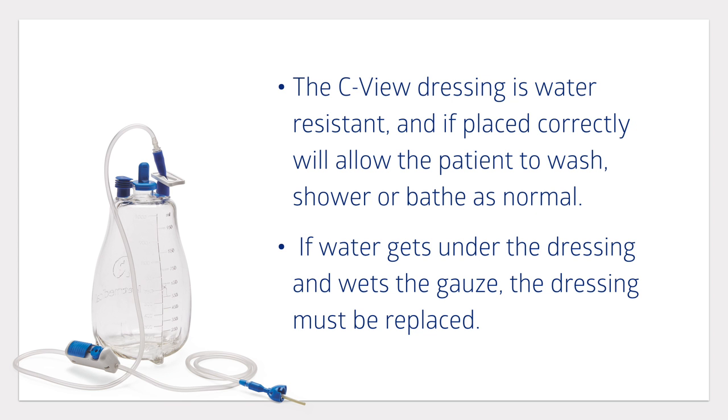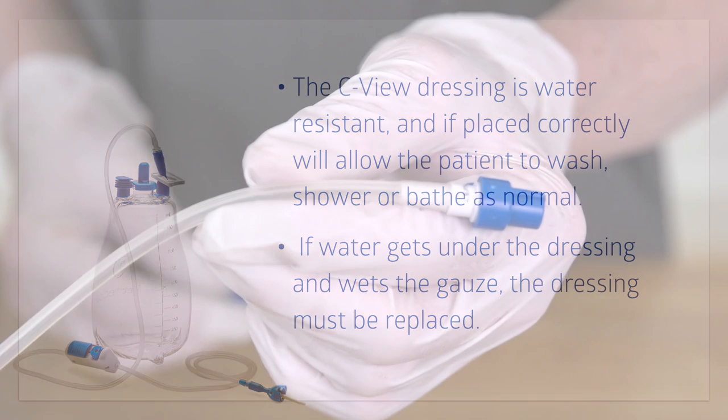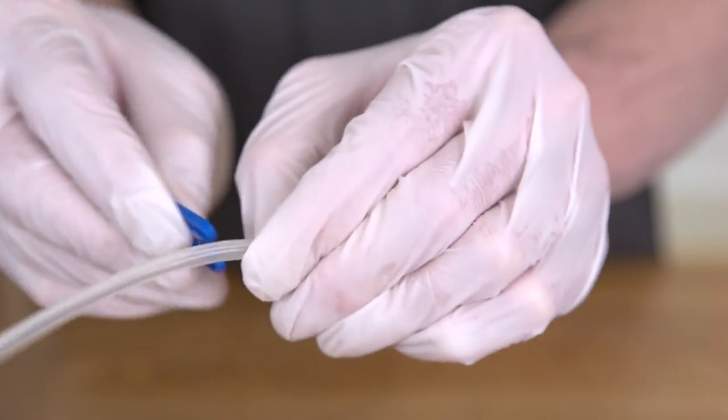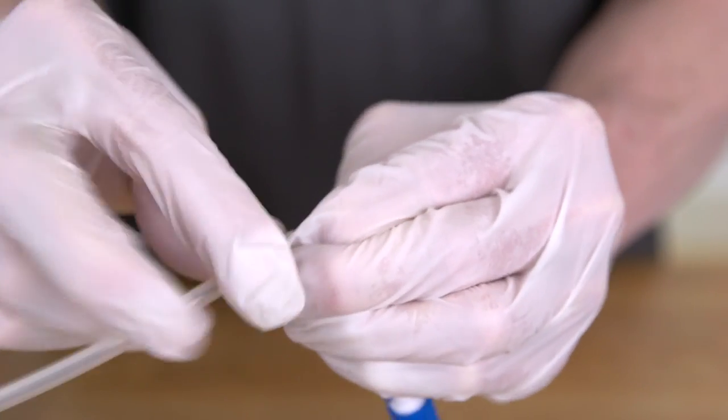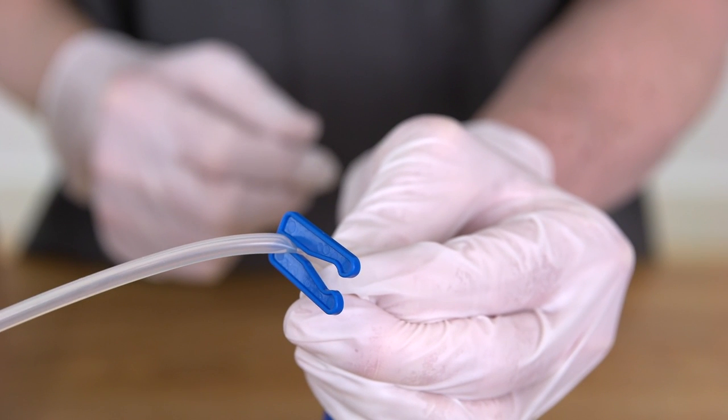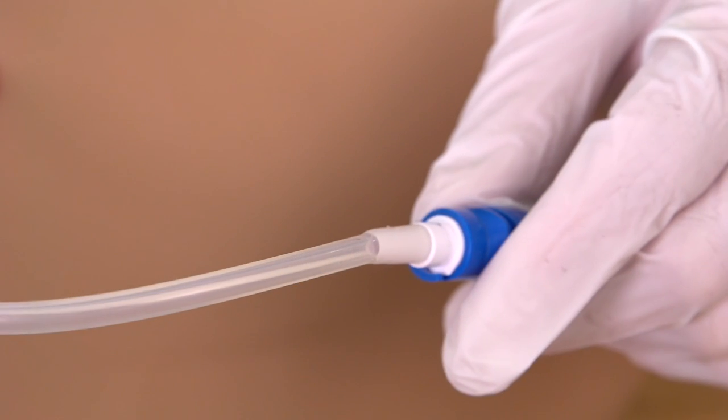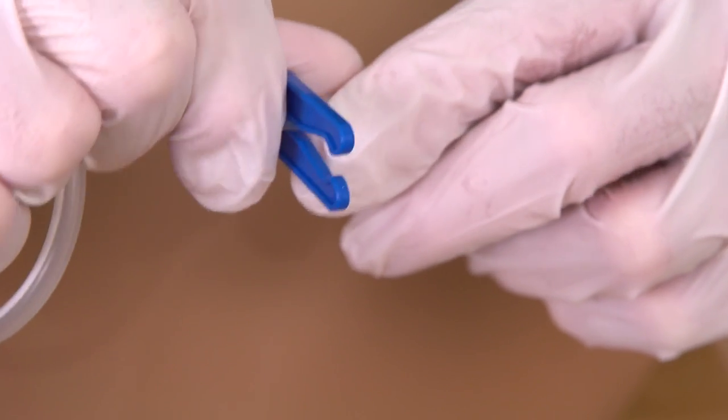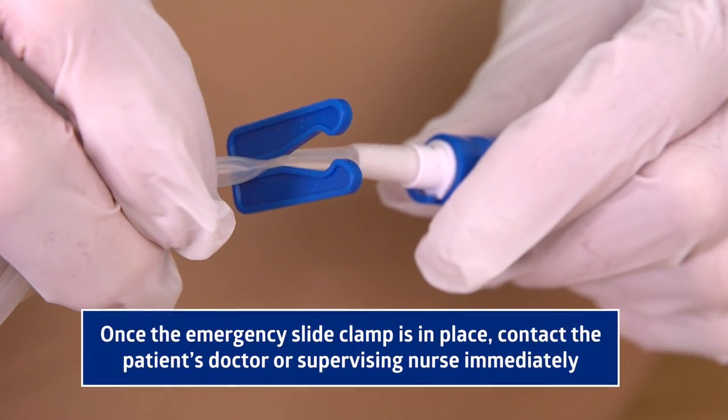The blue emergency slide clamp provided with the ROCKET Drainage Kit is intended for use only in the event that the catheter tubing is accidentally cut or pierced between the catheter valve and the patient. If you accidentally cut or pierce the catheter, quickly pinch the catheter closed and slide the clamp between your fingers and the patient's body. Once the emergency slide clamp is in place, contact the patient's doctor or supervising nurse immediately.